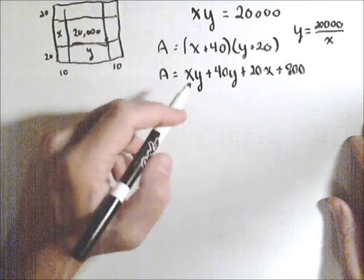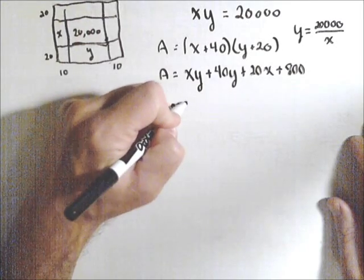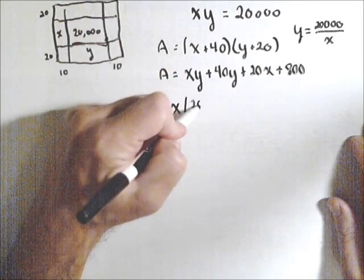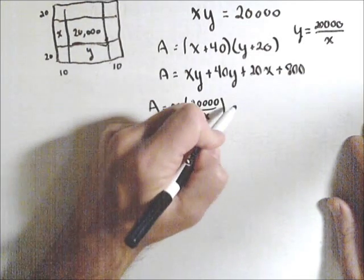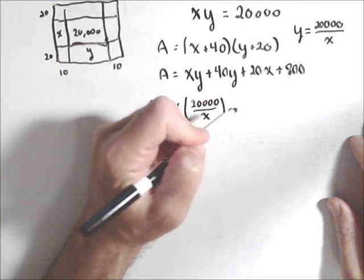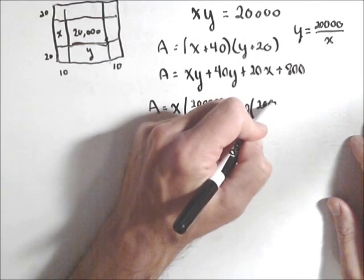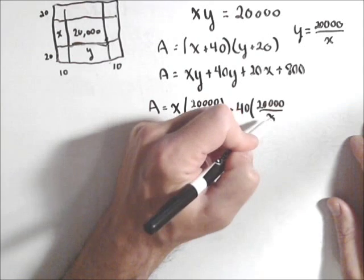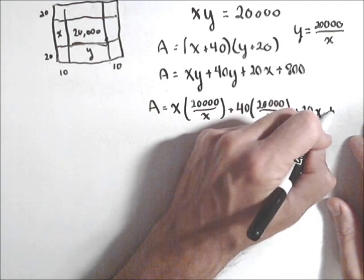And I'm going to plug that in for my y's. So I have A equals x times 20,000 over x plus 40 times 20,000 over x plus 20x, that stays the same, plus 800.